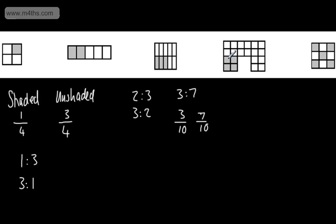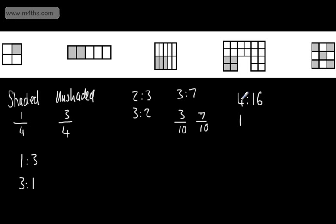If I look at this one here, the shaded ones — I've got four of those. The unshaded ones, I've got four, eight, twelve, sixteen. So I can write this as a ratio of shaded to unshaded as four to sixteen. Like fractions, we can simplify this and we divide by the highest common factor. The biggest number that goes into four and sixteen is four. So I can divide four by four, that gives me one, and divide sixteen by four, that gives me four.